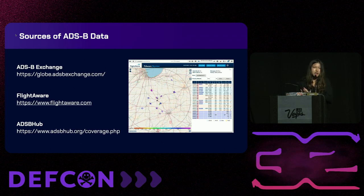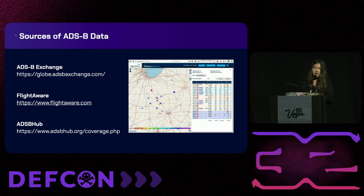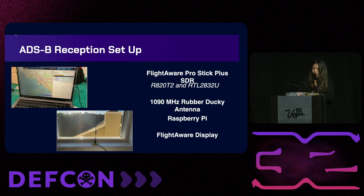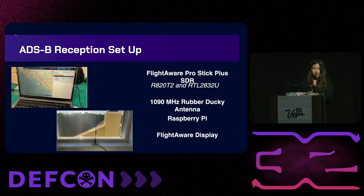There's a wide range of credible data sources for ADS-B data available right now — ADS-B Exchange, FlightAware, ADS-B Hub — but for this project I wanted to manually get transmitted signals. I set up my own ADS-B reception ground station, which consisted of a FlightAware Pro Stick Plus SDR utilizing the RTL2832U chipset, a 1090 MHz rubber ducky antenna for a cheap and reliable setup, a Raspberry Pi to analyze the ADS-B packets, and the FlightAware GUI display for a visual output of the ADS-B data.